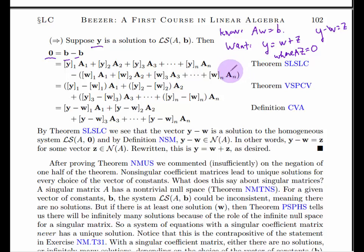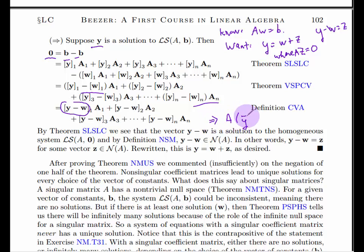Using the distributive law and rearranging sums of vectors, we get a sum of column vectors where each coefficient is the difference of corresponding components of Y and W — which is exactly the component of the difference vector Y minus W. This shows that Y minus W satisfies A times (Y minus W) equals zero, so Y minus W is in the null space. Setting Z equal to Y minus W gives us Y equals W plus Z.